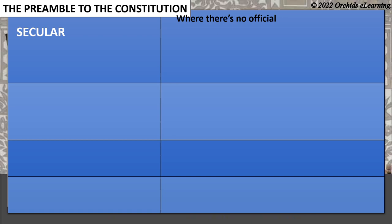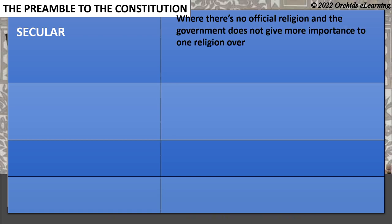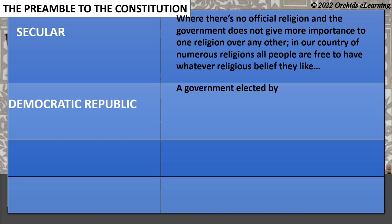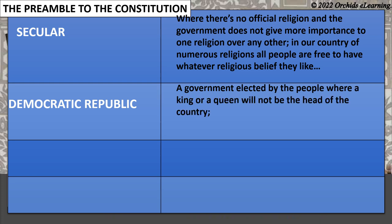A country where there is no official religion, and the government does not give more importance to one religion over any other. In our country of numerous religions, all people are free to have whatever religious belief they like. A government elected by the people, where a king or a queen will not be the head of the country — the head will be a president. A republic.